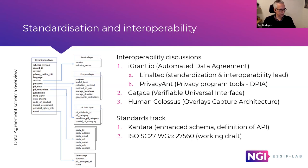We also have another project from Gatacamp, the Verifiable Universal Interface, where they've integrated the data agreement in the process of creating proofs. And we also have Human Colossus with the overlays capture architecture. All three projects have developed a data agreement based on standards — originally it started with Cantara, who created a schema. Work has progressed and been adopted by ISO. There is work in ISO 27560, currently in working draft, and what we're doing is a preview of what will be coming.